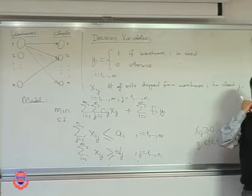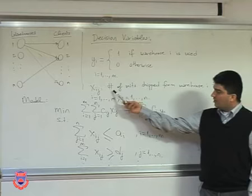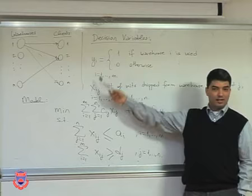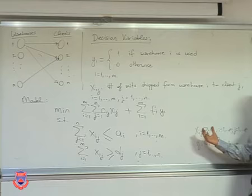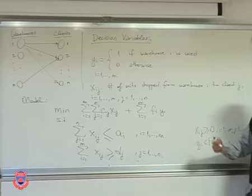There's one problem with this formulation. Note that xij denotes units shipped from warehouse i to client j, and yi denotes whether warehouse i will be opened. There should be a relationship between xij's and yi's. However, in the current formulation, there is no relationship at all — xij's and yi's are not connected. So the question is: how can we fix this formulation and enforce that relationship?